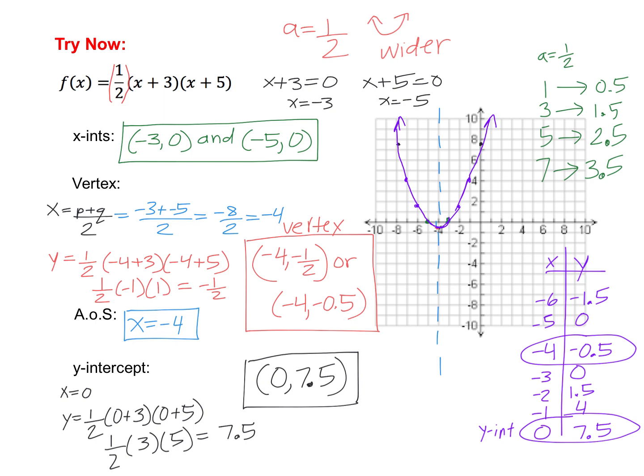Here are the solutions. The first thing you should have found were the x-intercepts at negative 3, 0 and negative 5, 0. Then the axis of symmetry is halfway between those, x equal negative 4. Plug in negative 4 in for x, and we end up with the y of the vertex at negative half. You could have written that as negative 1 over 2 or negative 0.5. The y-intercept, you plug in the 0 or you go to the 0 in the table. I showed it both ways. Here's the table. The table might be a little easier when a is a fraction just because there are a lot of decimals involved.